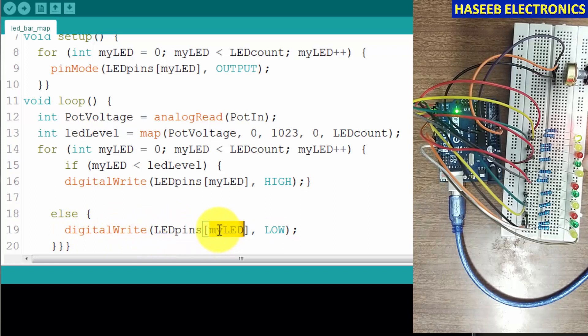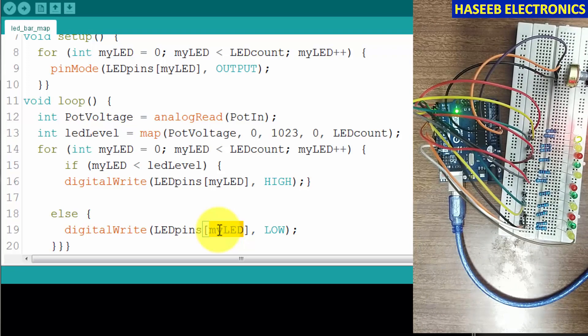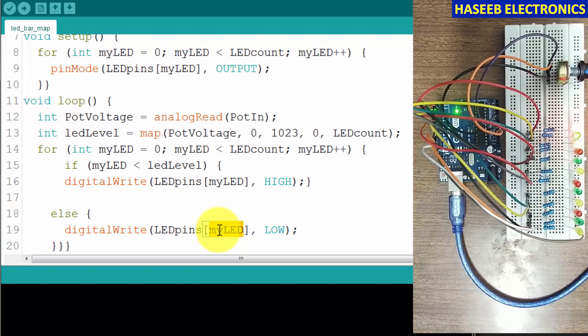LEDpins myLED level - if this time our value, the analog signal value, is up to this value and other LEDs are higher number, it will turn off other LEDs and turn on like this. Let's upload the program.